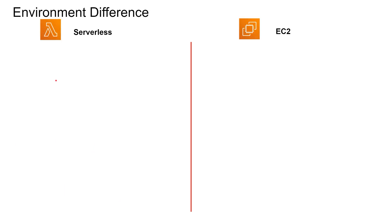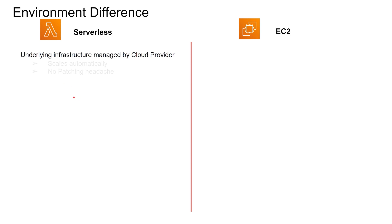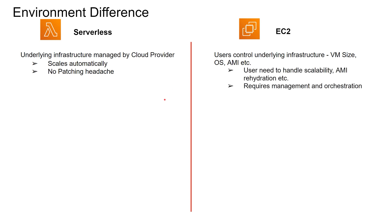Now that we understand what Lambda and EC2 are, let's take a look at the environment differences between them. For Lambda, the underlying infrastructure is managed by AWS — it scales automatically, and since you don't manage any server, you don't have to patch anything. For EC2, you control the underlying infrastructure, such as VM size, operating system, AMI, etc. However, that means you need to handle scalability by setting up an auto-scaling group, auto-scaling policy, etc. And since you are managing the server, you have to patch it and do AMI rehydration, which requires management and orchestration. So Lambda has significantly less maintenance overhead in this area.